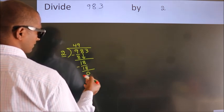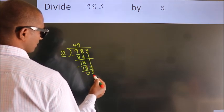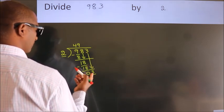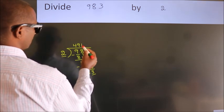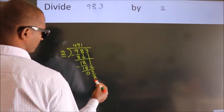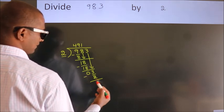After this, bring down the beside number. So 3 down, so 3. A number close to 3 in the 2 table is 2 ones 2. Now we subtract. We get 1.